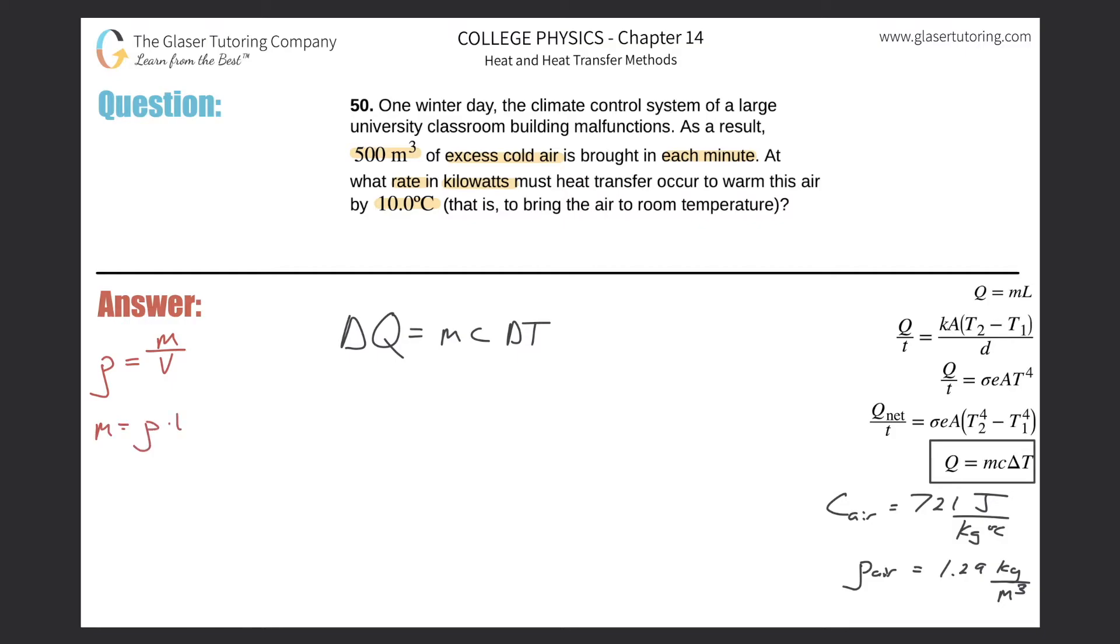Mass is equal to the density multiplied by the volume. So the mass, the volume they told us was 500 cubic meters, and the density of air is a constant. That's going to be 1.29 kilograms per cubic meter, and the volume they told us was 500 cubic meters.